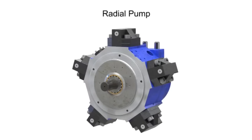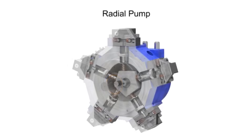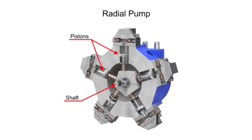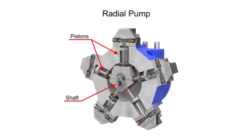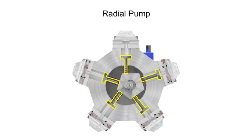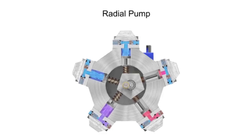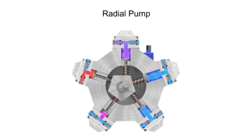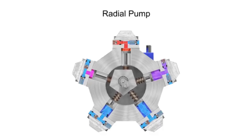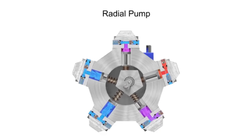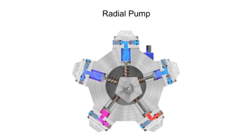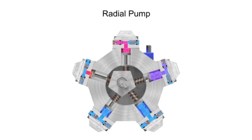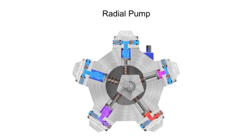Radial pumps are designed so the pistons stroke in a direction at right angles to the shaft. The pistons are arranged like wheel spokes around a cylinder block with an eccentric central cam mounted on a drive shaft. As the shaft rotates, the cam moves towards the pistons, forcing them down into the cylinder block and discharging the fluid. As the cam moves away, springs help retract the piston and cause the intake stroke. Check valves ensure that fluid only enters the inlet ports and only exits the outlet ports.